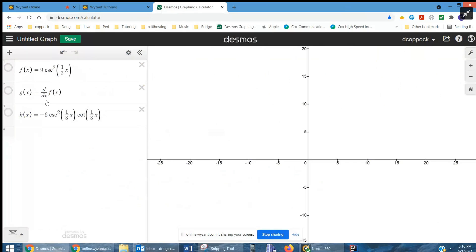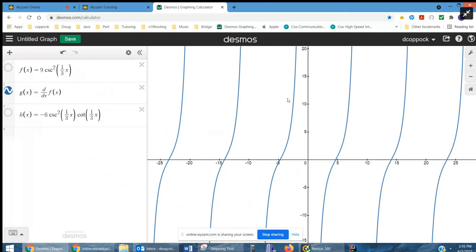If I use the Desmos derivative operator and call g(x) the derivative of f(x), that's what it looks like. And if I graph h(x) as the answer we just came up with, you can see that row 2 and row 3 are identical, which confirms that h(x) is the correct answer.